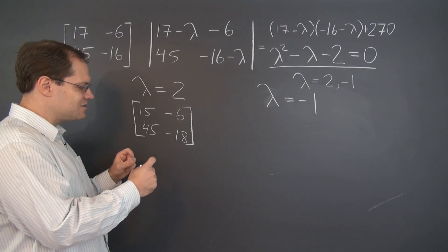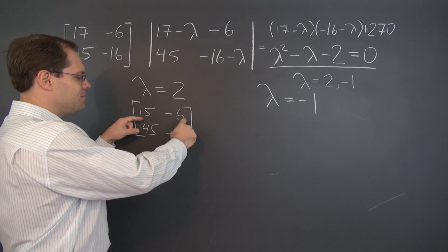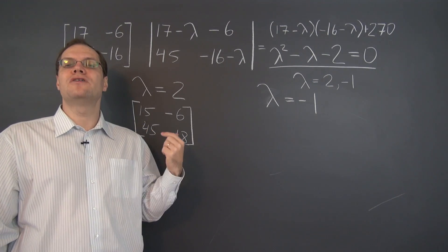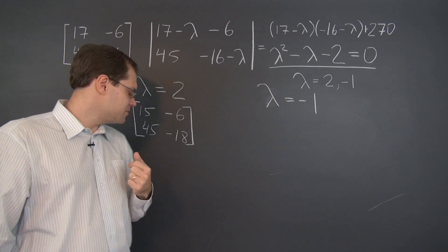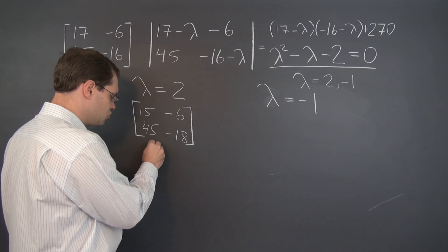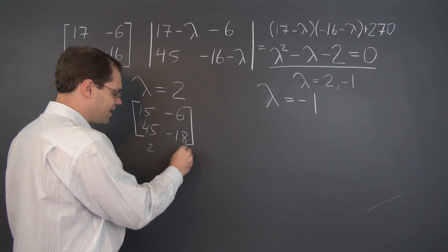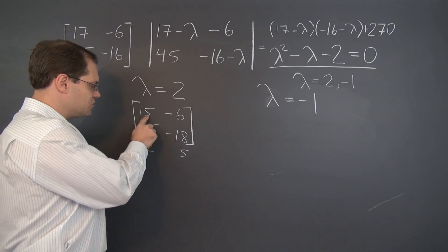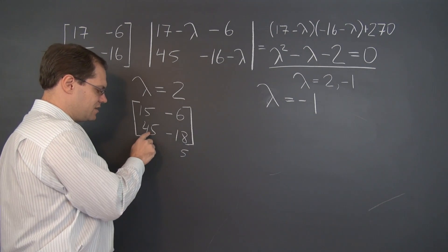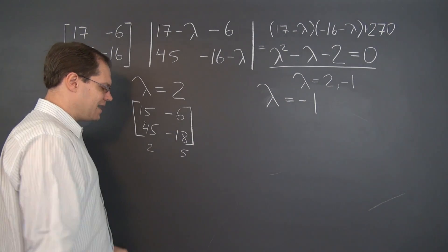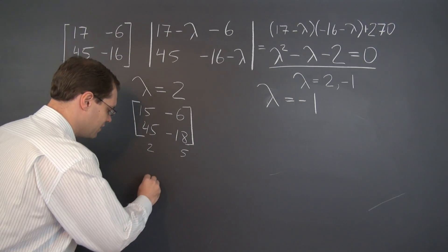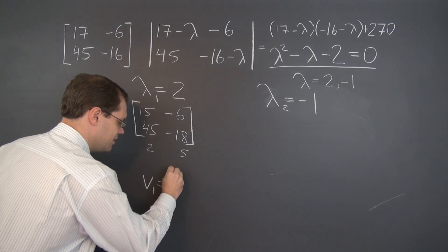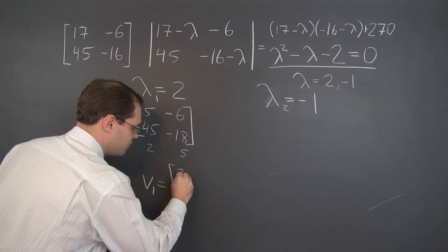And I think the easier way to see that it's singular is to compare the rows. And of course this row is 3 times this row. The columns are in a more complicated proportion. And that proportion is 2 to 5. So you have to take 2 of this column, and that'll match 5 of this column. 2 times 15 is 30, and this is minus 30. And here we have 90 and minus 90. So indeed, it's 2 and 5. So the corresponding eigenvector V₁ is [2, 5].